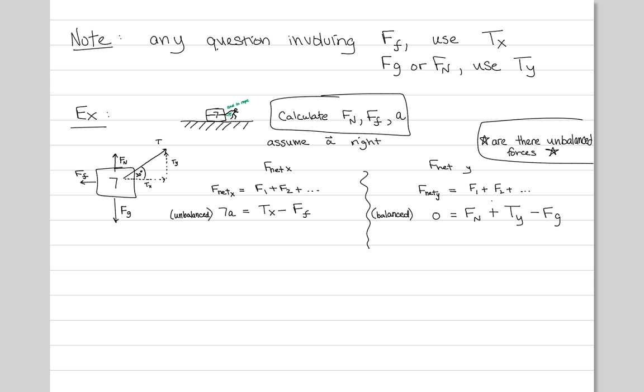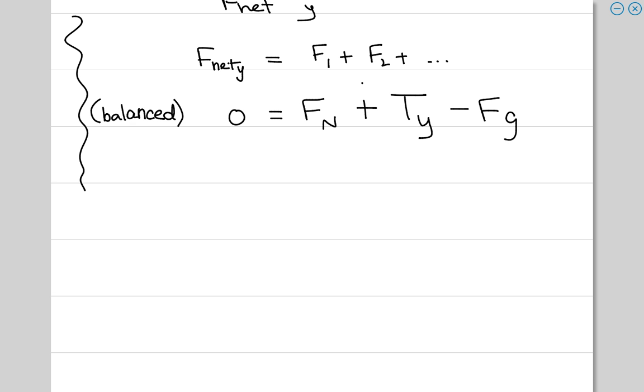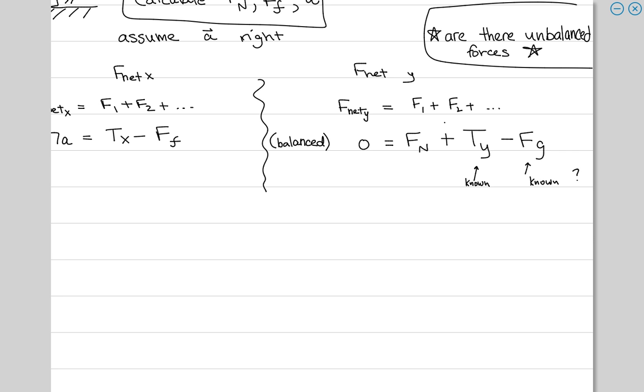So what are we trying to solve for? So let's start over here on the right side. Can we get TY and FG? Are these known? FG is always easy to get. You have the mass, right? So this one's easy. This is just going to be seven times 9.81. Is TY easy to get? How do you get that one? 120 sine 30. Good. So right away we can solve for FN. Do you agree?